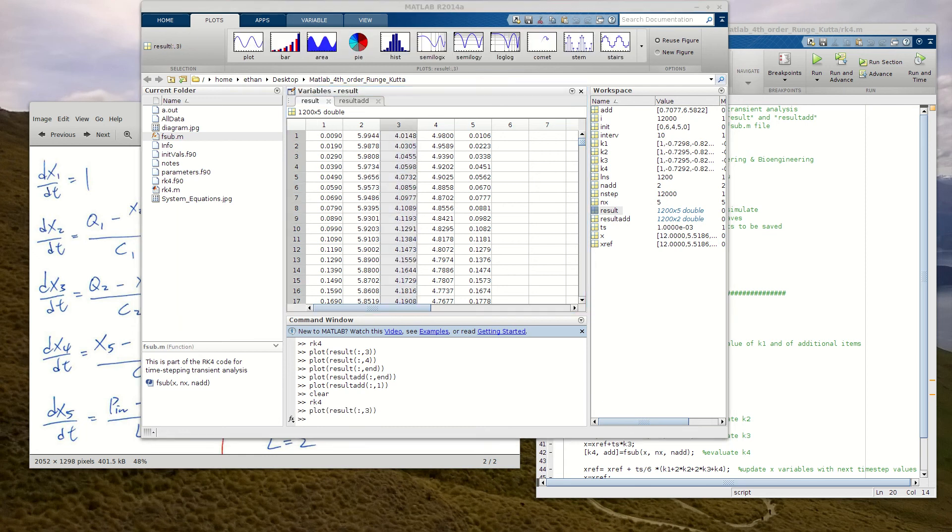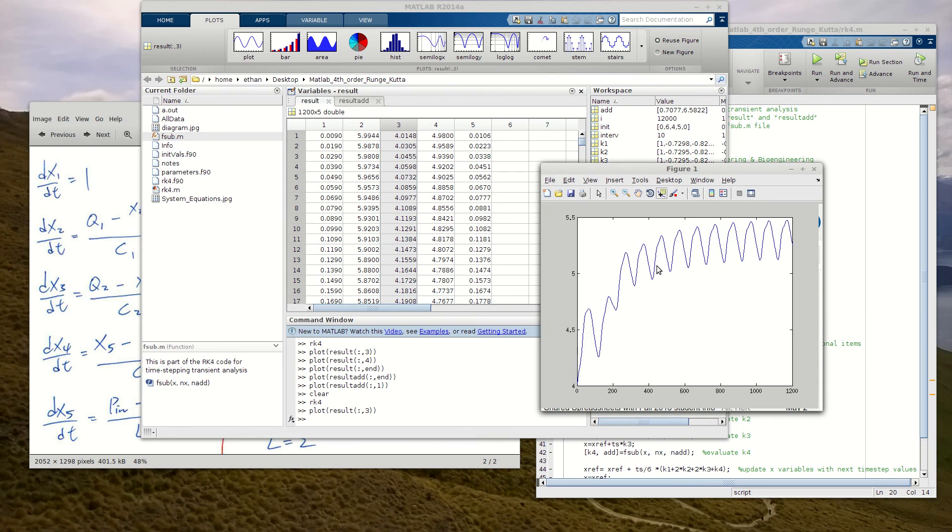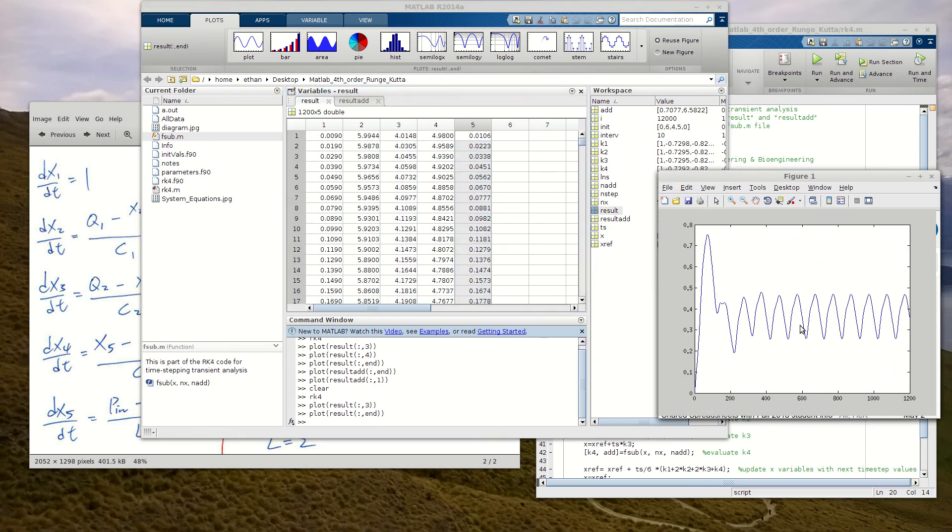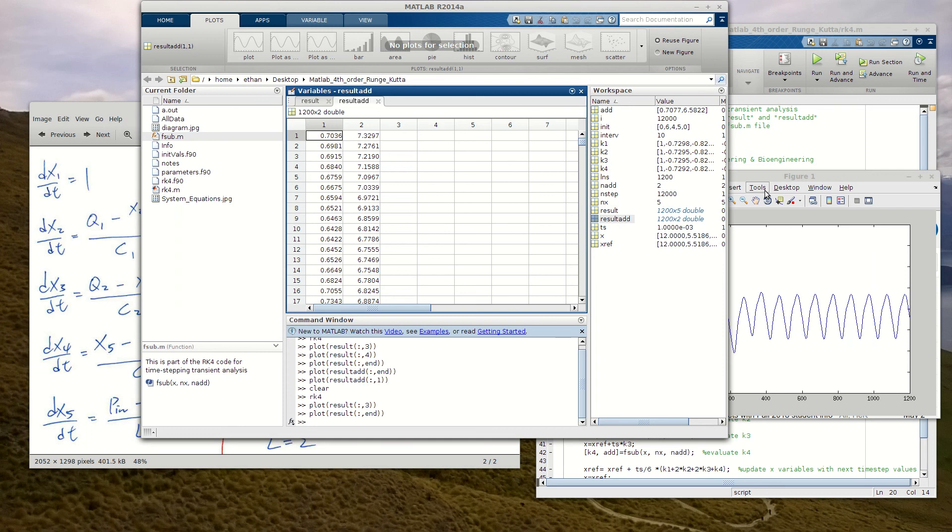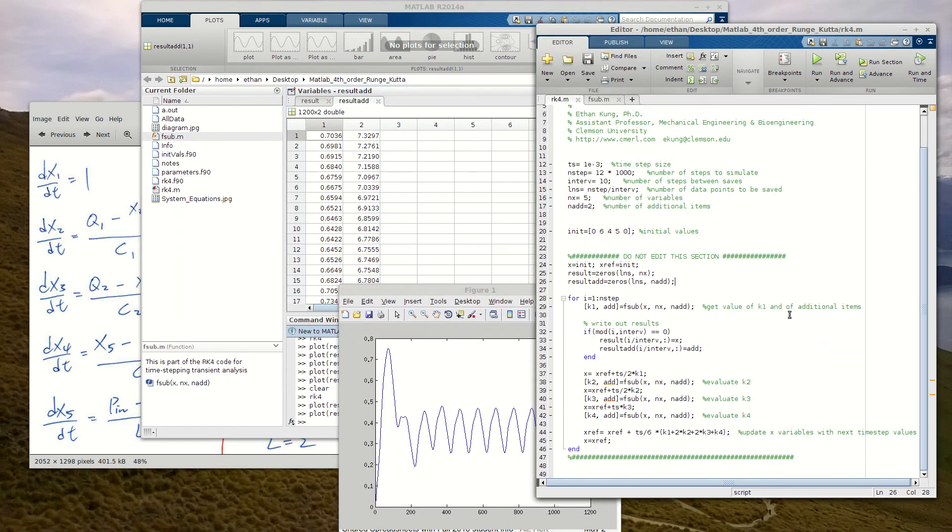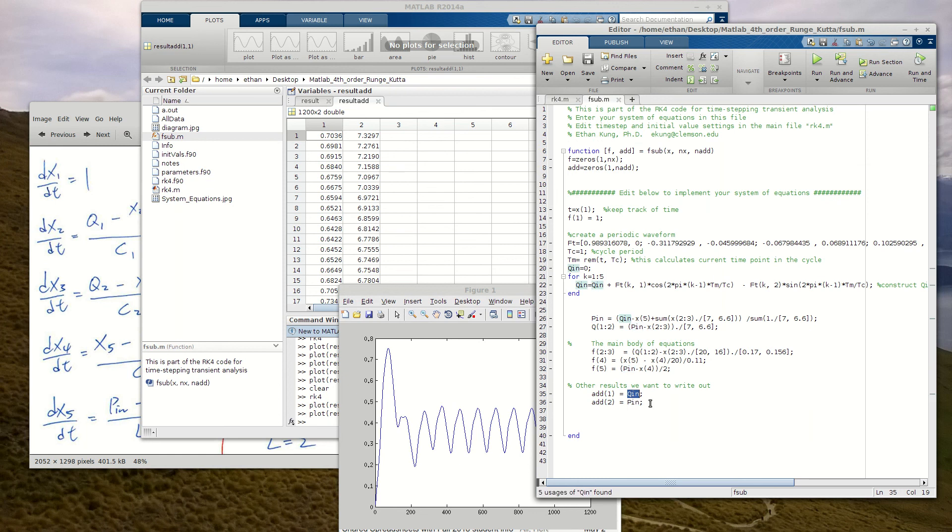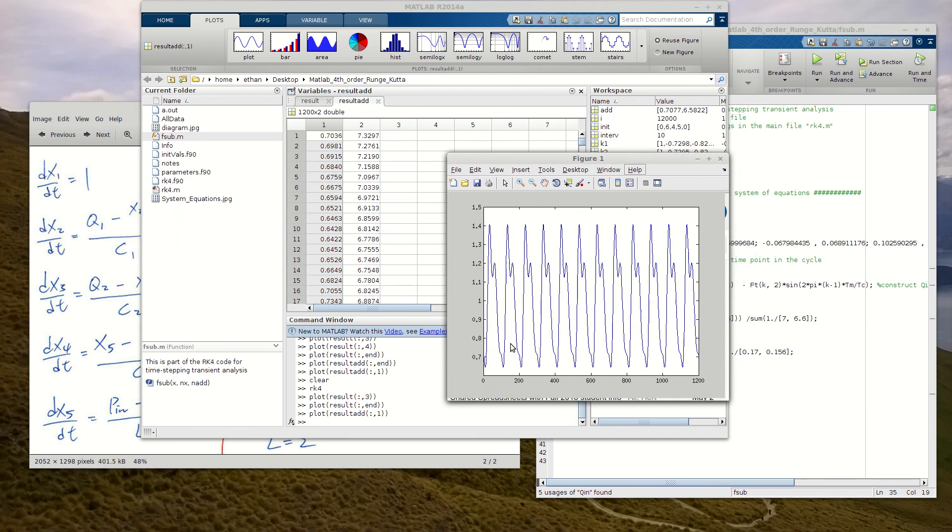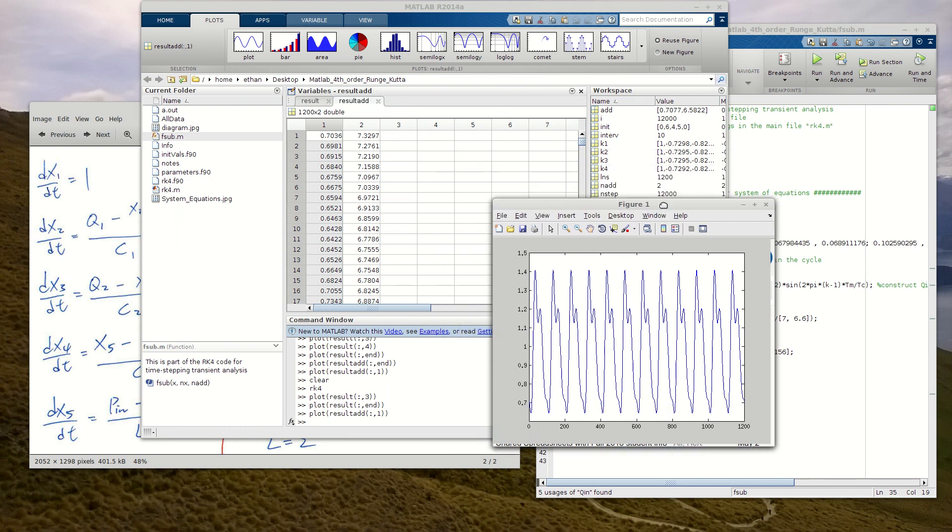So this will be x3. If I were to plot it, this shows you what x3 looks like over time. And then, if I want to see x5, this is x5. And if I want to see the result_add, then here's, remember, the additional results we have are qin and pin. So the first one is qin. And if we plot it, you see that it is indeed a periodic function, as we specified before.